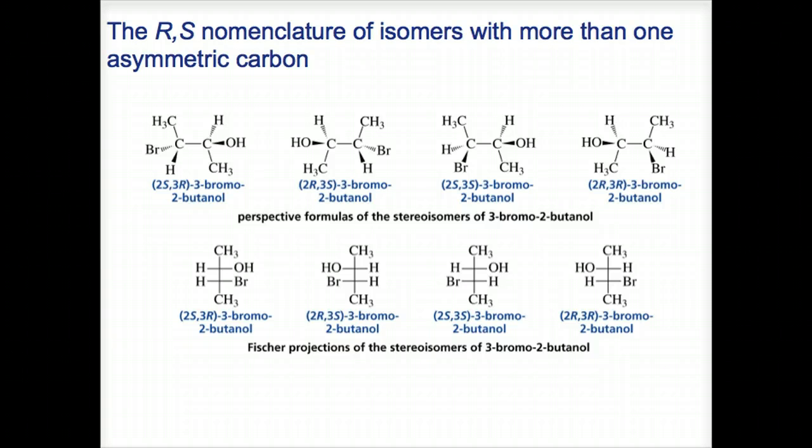The R-S nomenclature of isomers with more than one asymmetric center are illustrated on this slide. We're going to use, for example, brackets 2S, 3R brackets in order to designate the stereochemistry at two separate asymmetric carbons in the same molecule.